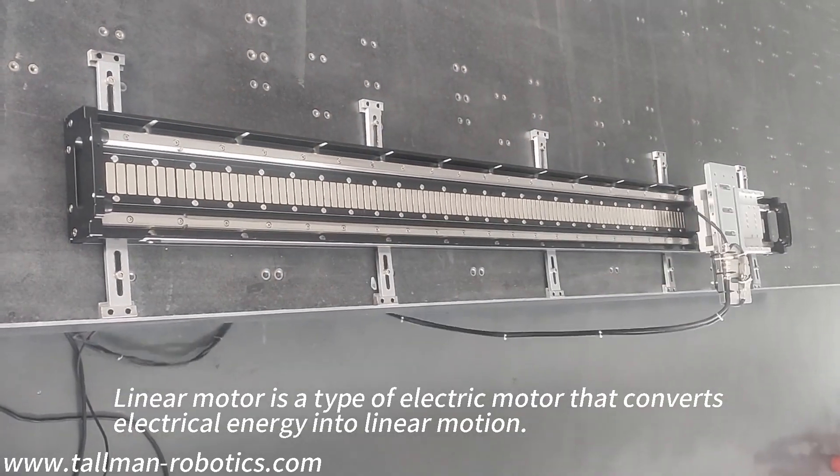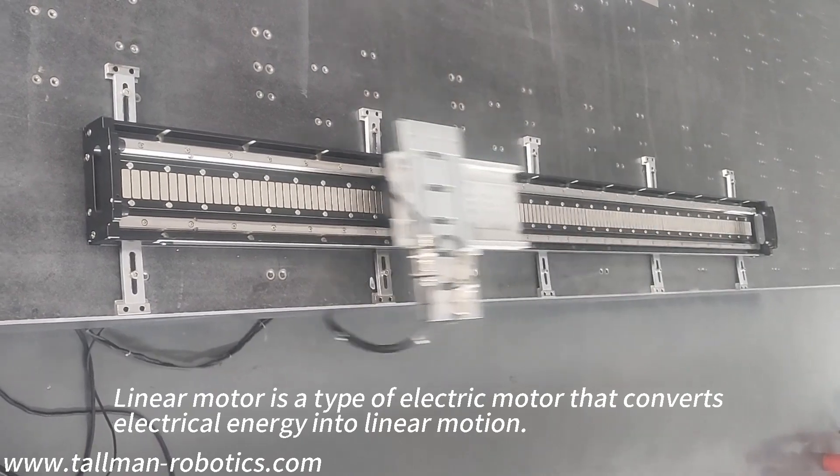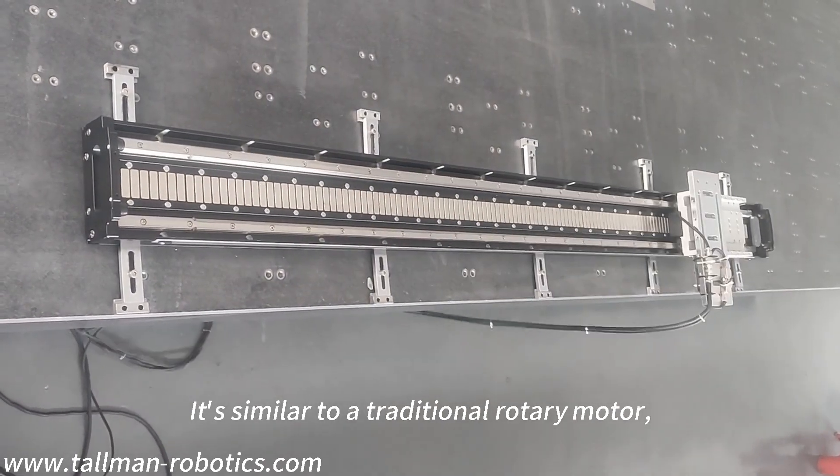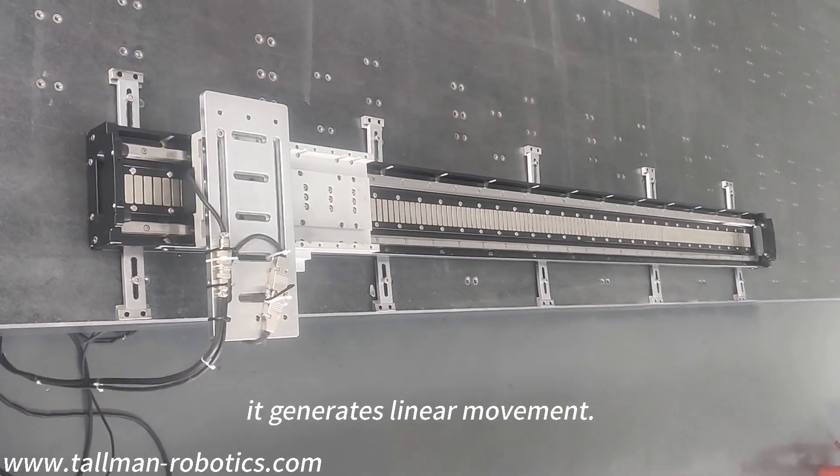A linear motor is a type of electric motor that converts electrical energy into linear motion. It is similar to a traditional rotary motor, but instead of producing rotational motion, it generates linear movement.